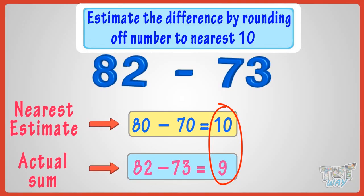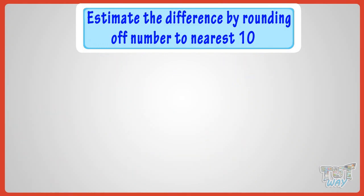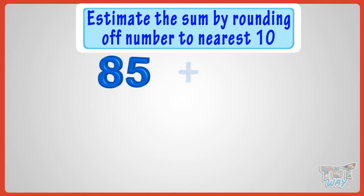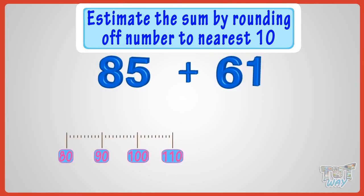Now, let's take another example. We have to add 85 and 61. Here, both the numbers are midway between two 10s. So, we will be rounding off them.